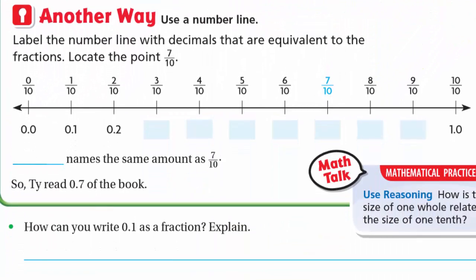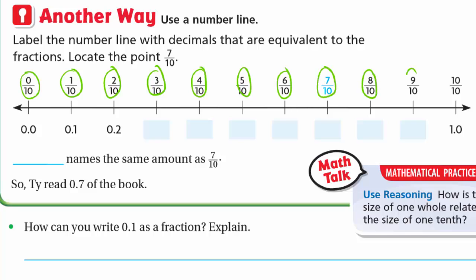Another way is to use a number line. Label the number line with decimals that are equivalent to the fractions and locate the point 7 tenths. On the number line we have 0 tenths, 1 tenth, 2 tenths, 3 tenths, 4 tenths, 5 tenths, 6 tenths, 7 tenths, 8 tenths, 9 tenths, and 10 tenths which is the whole one. Below we have 0.0, 0.1, 0.2, 0.3, 0.4, 0.5, 0.6.